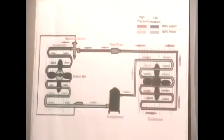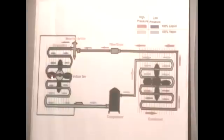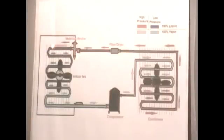From the condenser it goes to your metering device, whose job is to meter how much refrigerant is allowed to go into your evaporator coil. At that point the state is going to be low pressure, 100% liquid. It then absorbs heat from the indoor air passing through the evaporator coil via the indoor fan motor, and it changes the state from low pressure 100% liquid to low pressure 100% vapor, and it goes back to your compressor again. And the cycle begins.